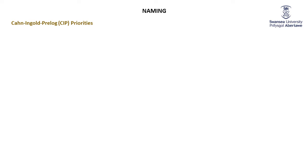Even though it's not strictly on the WJEC syllabus, it is worth spending a little bit of time looking at how we distinguish between the two enantiomers of a chiral molecule. To do that, we first introduce the Cahn-Ingold-Prelog, or CIP, priorities scheme. We'll use this again next week when naming different isomers of alkenes, so it's absolutely not a waste of time. We're getting a double dip for our efforts.